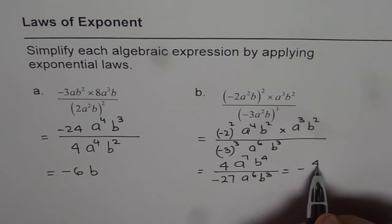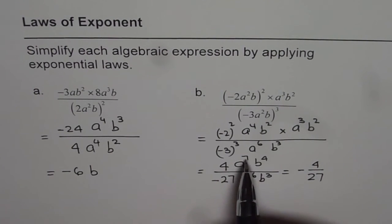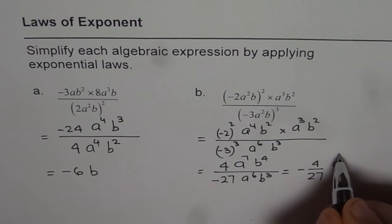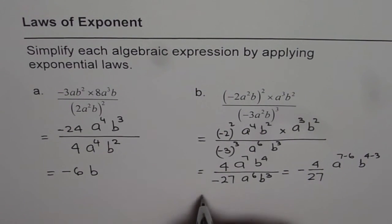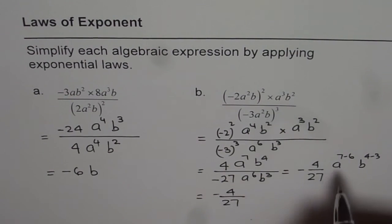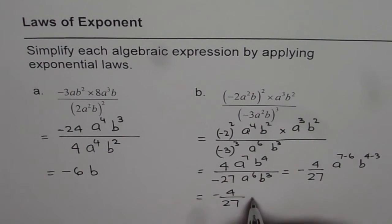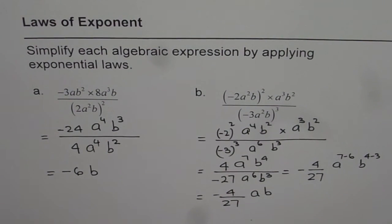So we can now write this as minus 4 over 27. That's the number. a is 7 minus 6, and b is 4 minus 3, right? So what we get here is minus 4 over 27. 7 minus 6 is 1, so we get a. And 4 minus 3 is also 1, so we get b. So that is our answer: minus 4 over 27 a b. Thank you.